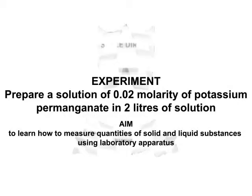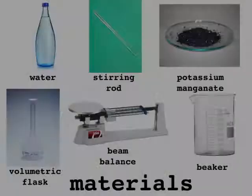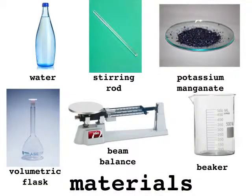Hello students. Today's lesson aims to show how to measure quantities of solid and liquid substances using laboratory apparatus. We will prepare a potassium permanganate solution to show how to measure the substances and how to use the apparatus. It is very important to take accurate measurements of various quantities for better experimental results of scientific processes.